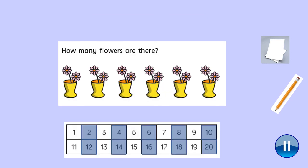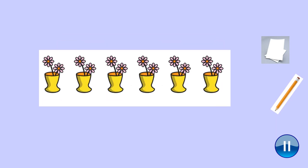How many flowers are there? Remember to count in twos. Then write the answer on your piece of paper. We'll go through it together on the next slide. Let's count the flowers together. There are two, four, six, eight, ten, twelve flowers. So the answer is twelve. You should have written the answer twelve. Give yourself a tick if you got it correct.